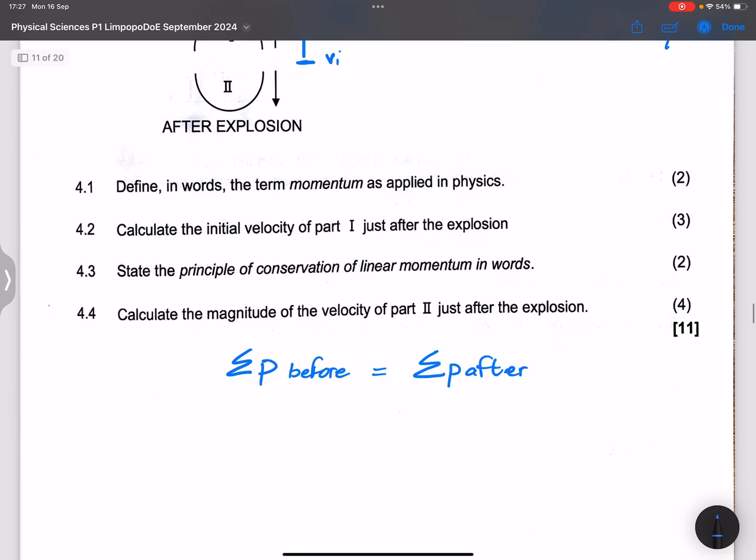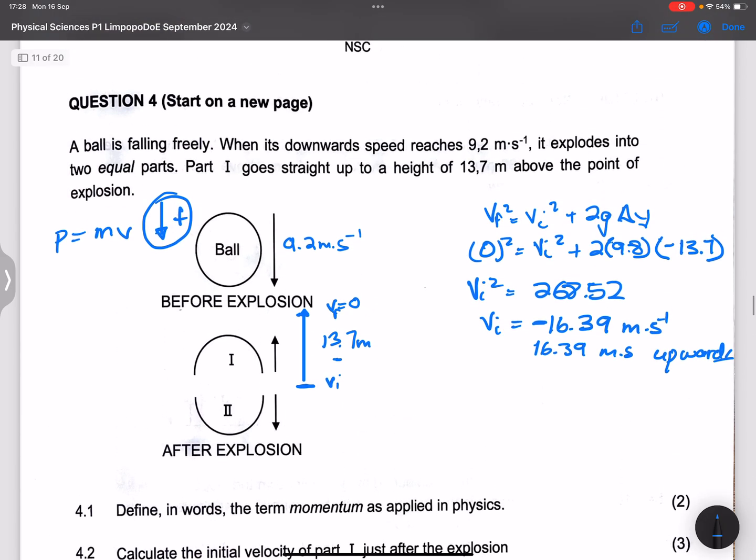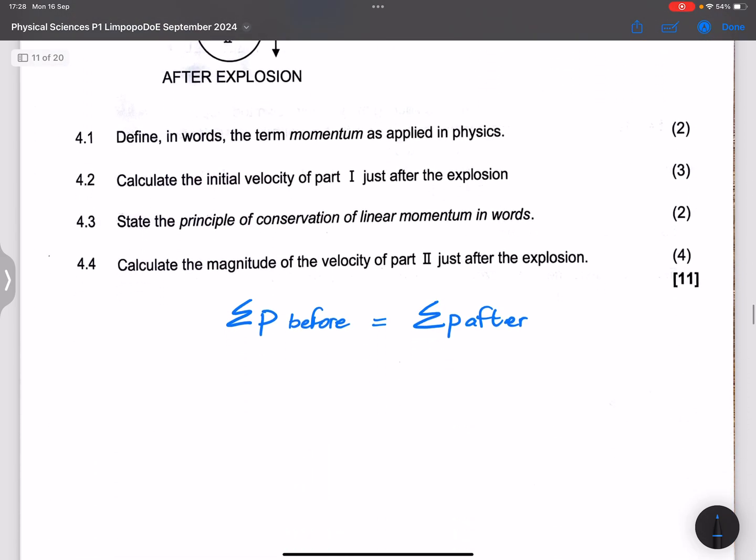Now before collision, remember that the whole part was just one part. So part one and part two were together. So let's assume that they've got a mass m because we're not given the mass there.